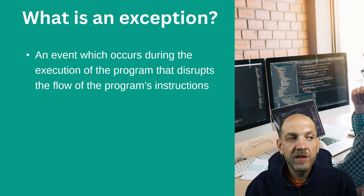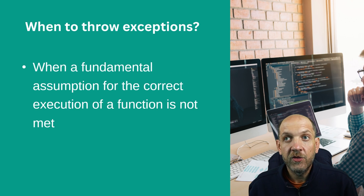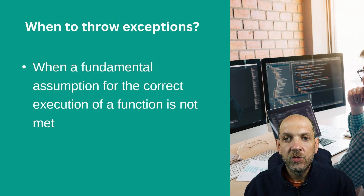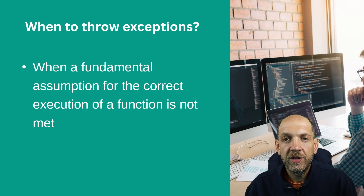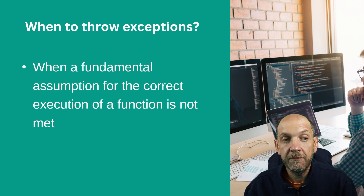I know that this definition might be a little bit too theoretical and it doesn't really answer the question we started with — so when should we throw an exception? Generally I would say that we should throw an exception whenever a fundamental assumption for the correct execution of a function is not met.